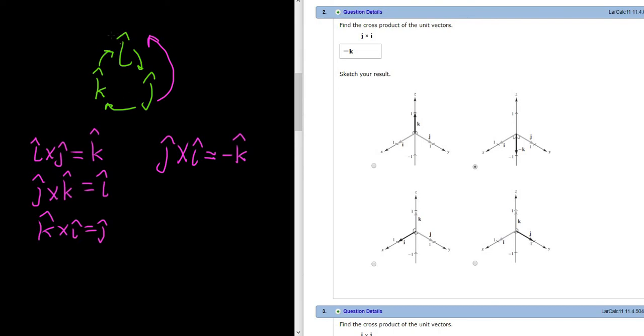Just as another example, if you were to do I cross K hat, this would give you negative J hat. And if you were to do K hat cross J hat, this would give you negative I hat.